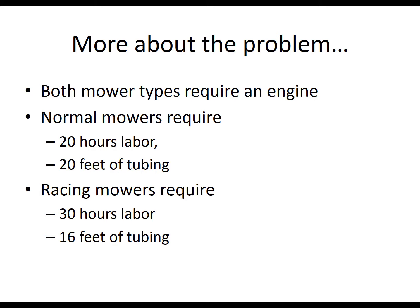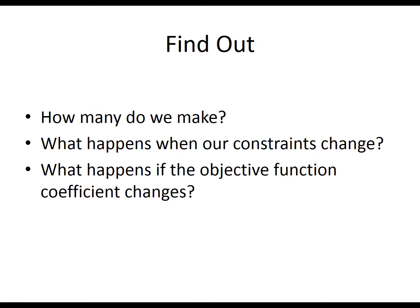With this information, we are now ready to find out how many lawnmowers in total we make, and also how many of each type we make. Along with that, we would also be able to answer what happens if we change the amount of resources we have on board — for instance, what if we want to increase the labor hours, or if we want to decrease the amount of tubing, and how that's going to affect our profits. We can also figure out whether we can change the price on each type of lawnmower to increase or maximize our profit.